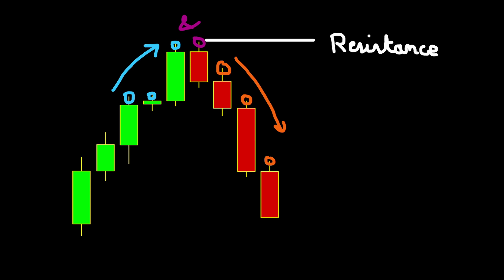An interesting parameter at this stage is how many candles you should consider before and after the candle of interest. Since this is up to the user and it would be good to experiment with different values, we are going to define these as two different variables called n1 and n2 in our program. And the index of the candle of interest will be a variable called L that we are going to use in the program. Okay, so now we can move on to see how we are going to write this in Python.